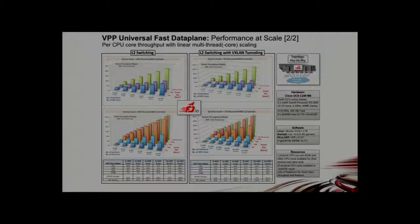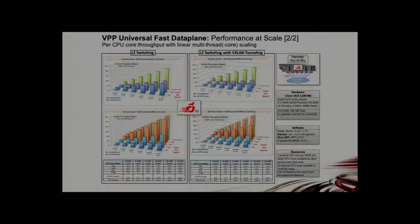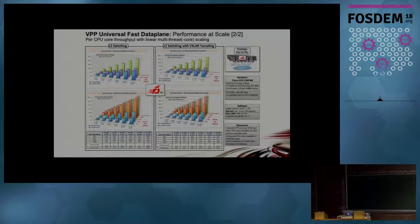It sounds like some people are still doing switching in this world. For layer 2 processing, we achieve 20 million packets per second per core with the same linear increase. That is pretty cool.